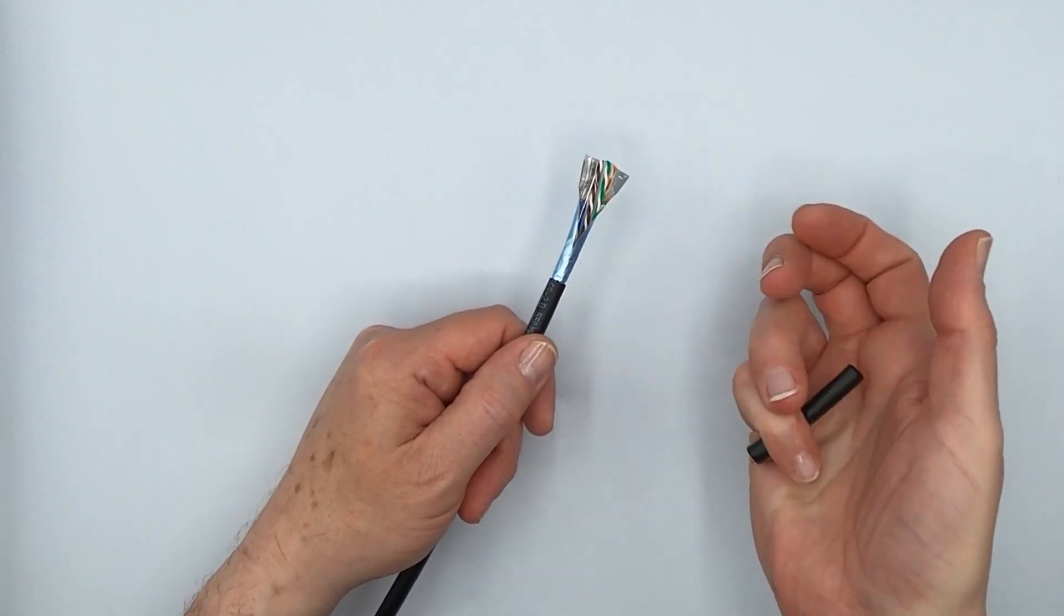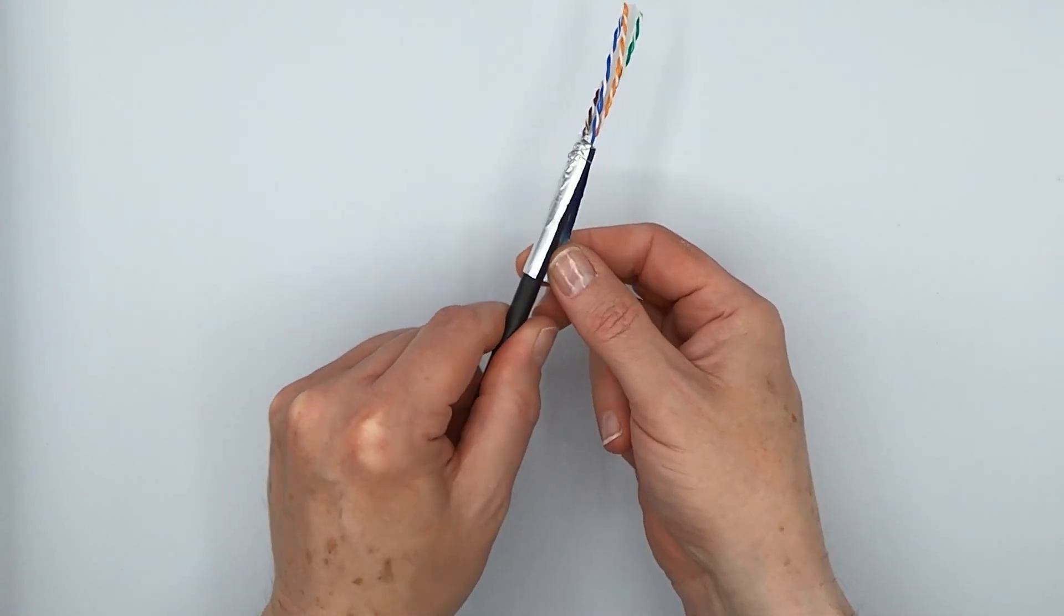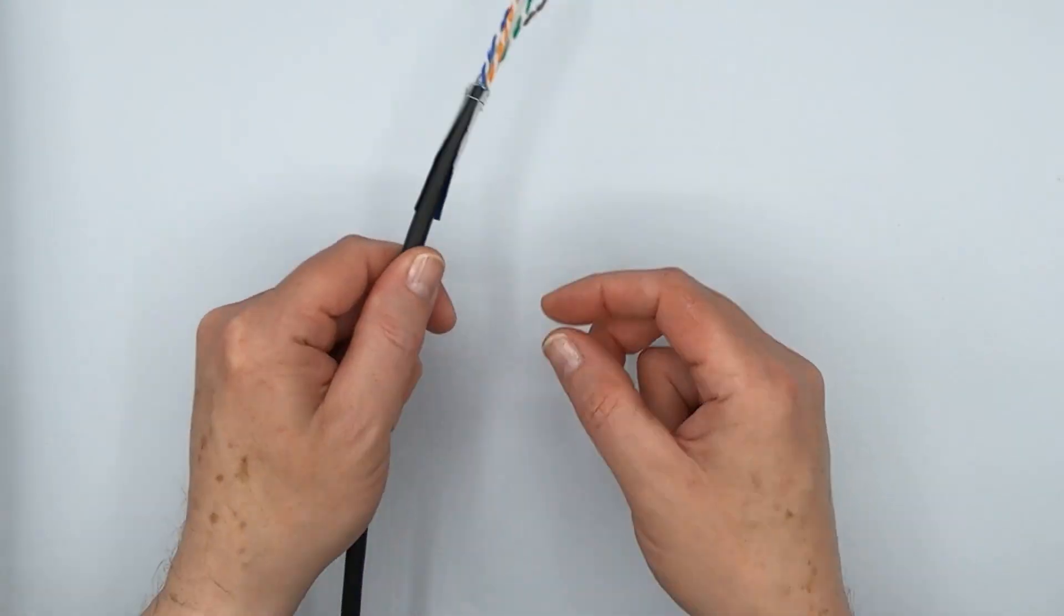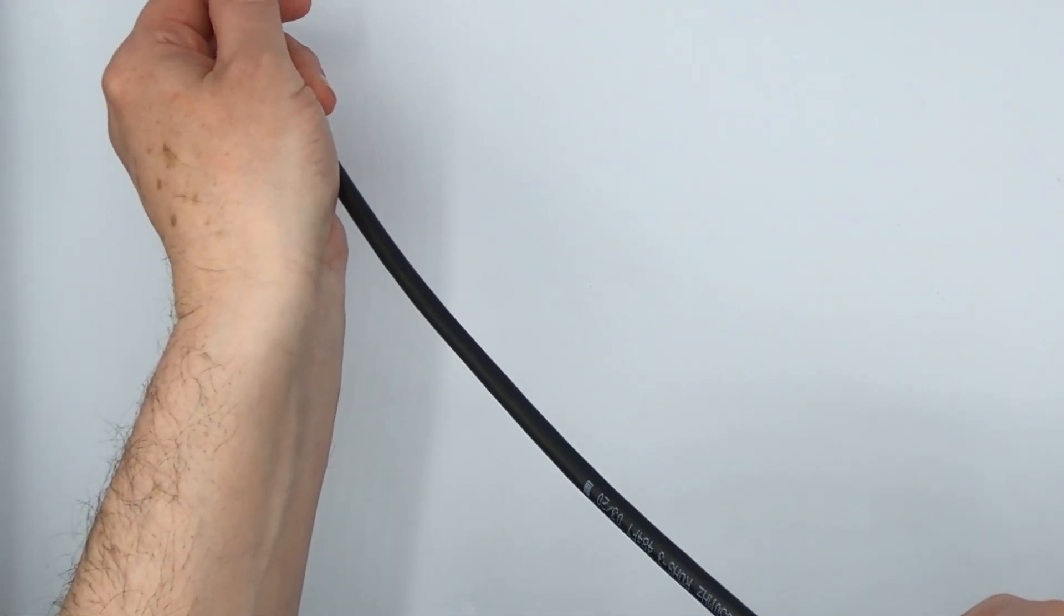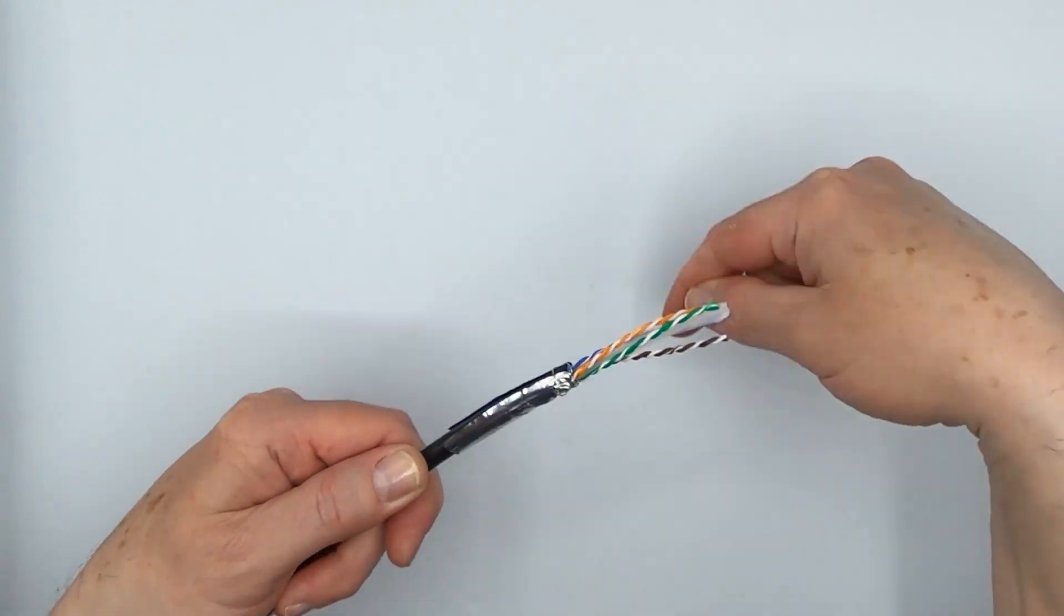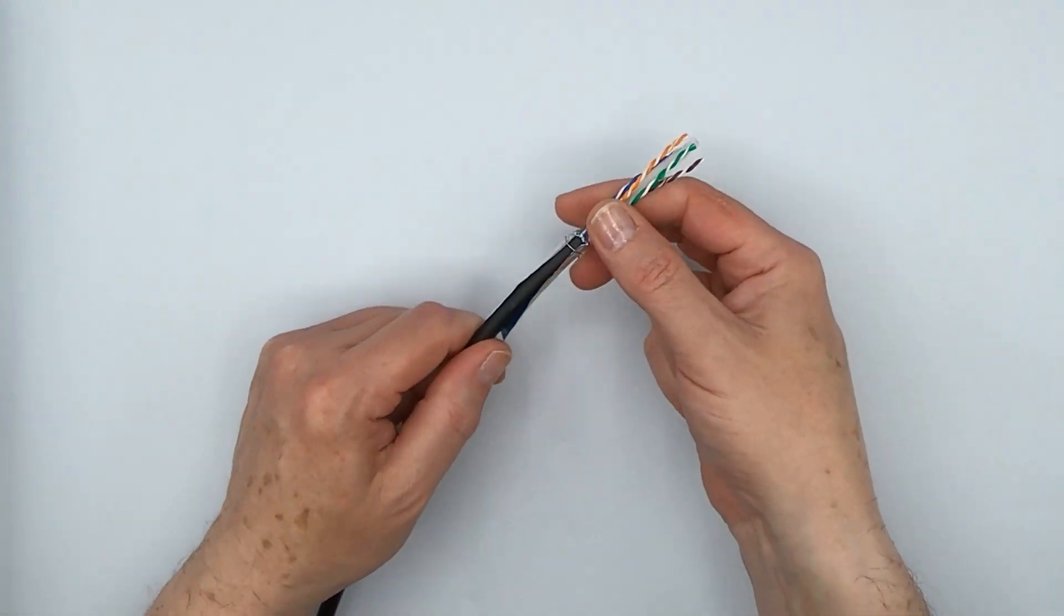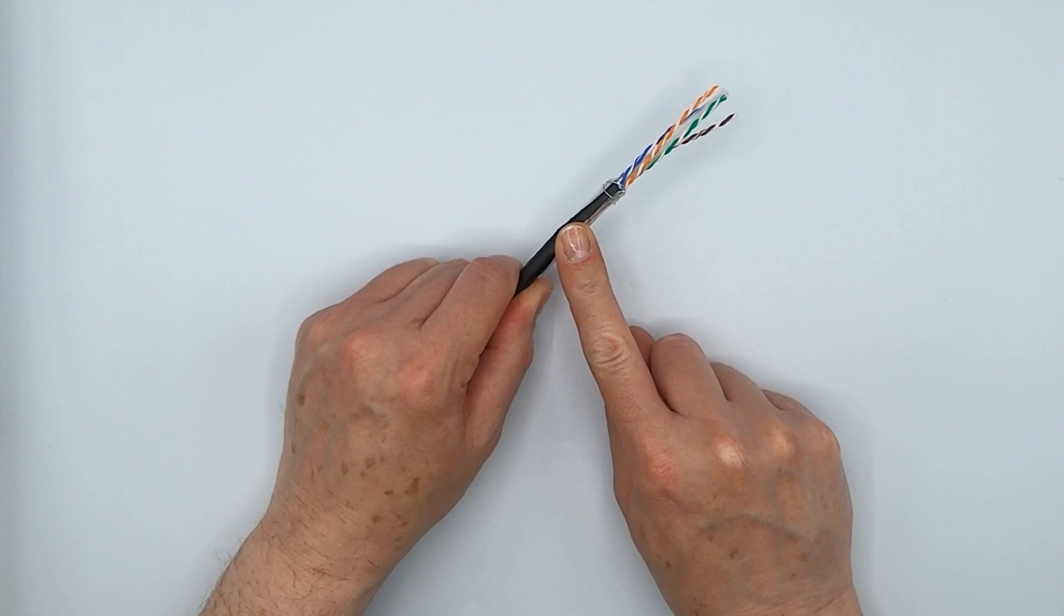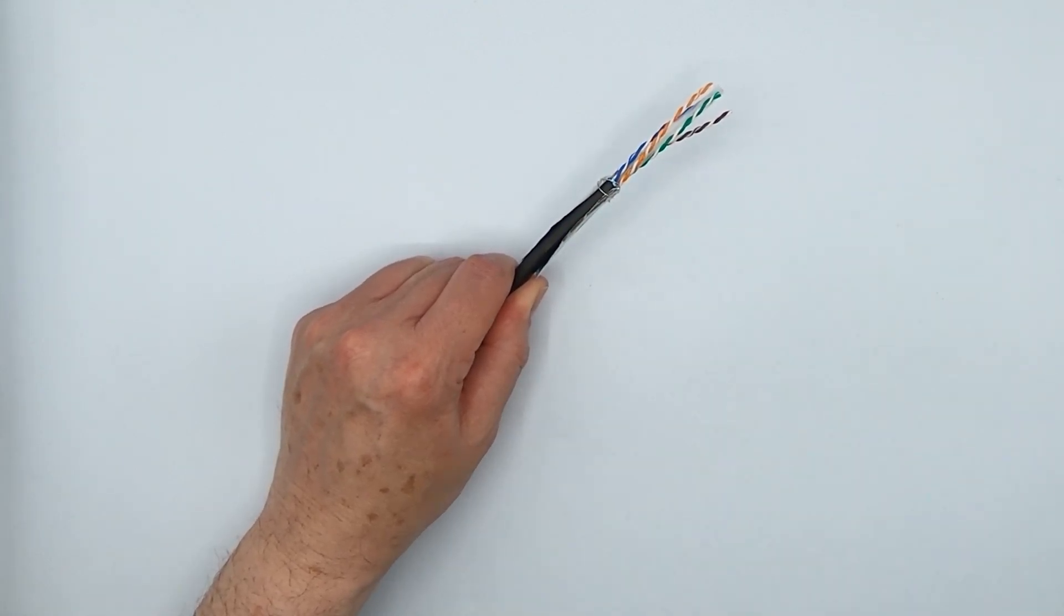Well, the traditional way of dealing with that has been to fold the cable shield backwards, like so, right along the cable jacket, take the drain wire that's in here, and then fold it and then wrap it around. That's been the traditional way of dealing with it. And it works. There's nothing wrong with doing it that way.